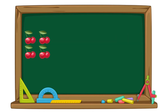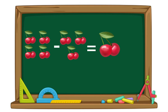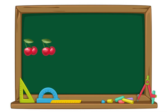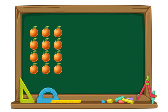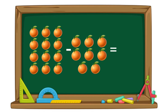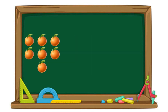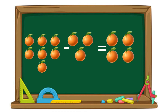4 cherries minus 3 cherries equals 1 cherry. 2 cherries minus 1 cherry equals 1 cherry. 12 oranges minus 8 oranges equals 4 oranges. 7 oranges minus 3 oranges equals 4 oranges.